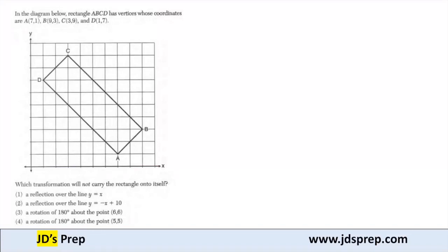Hello, welcome to JD's Prep. In the diagram below, rectangle ABCD has vertices whose coordinates are A(7,1), B(9,3), C(3,9), and D(1,7).